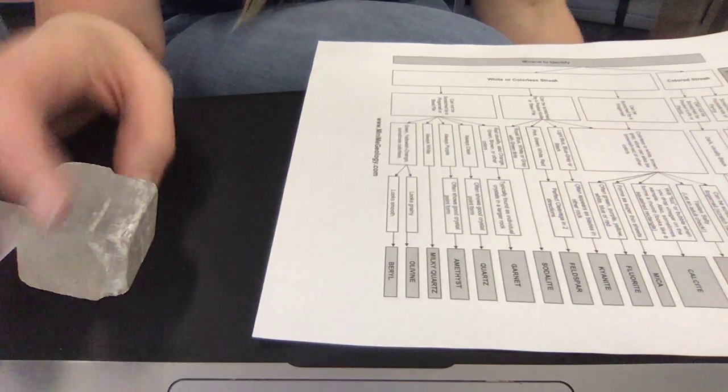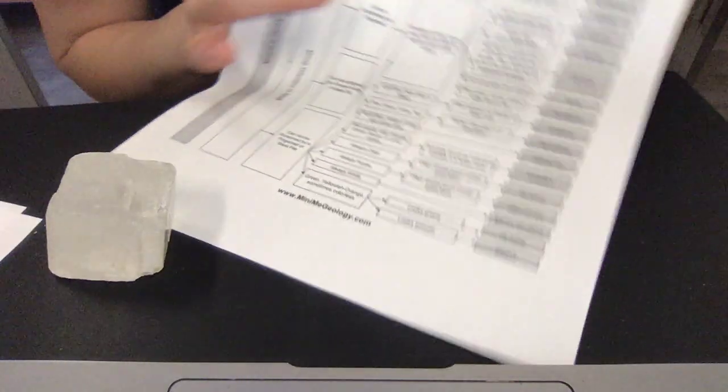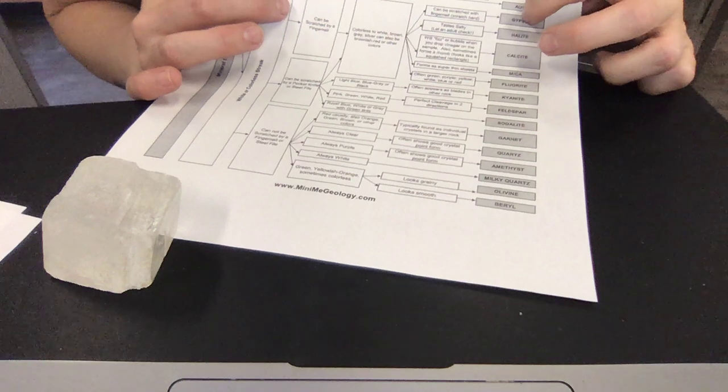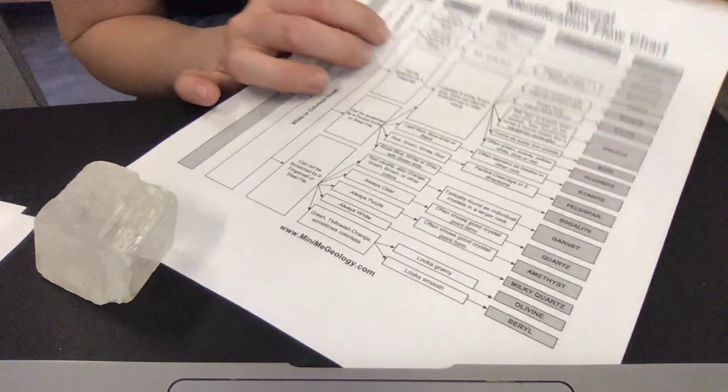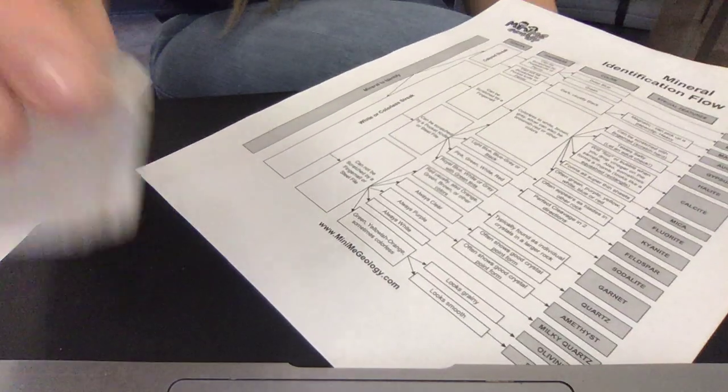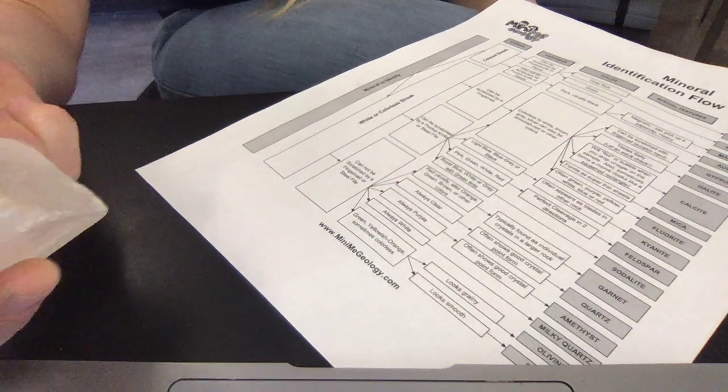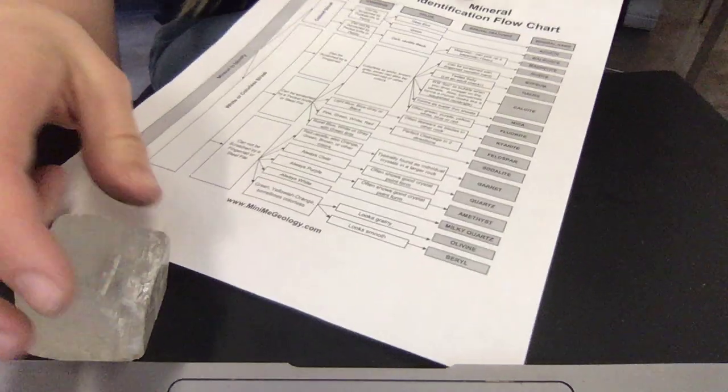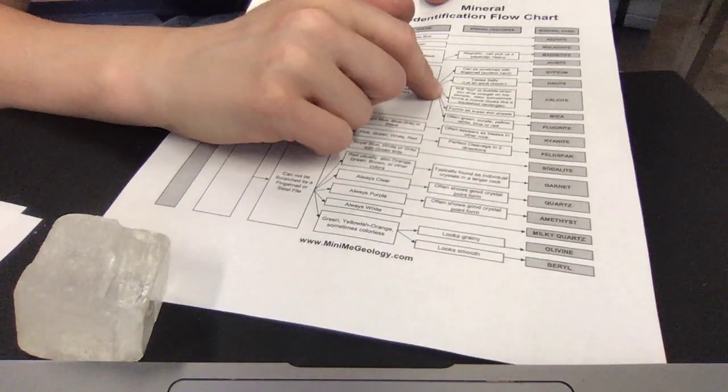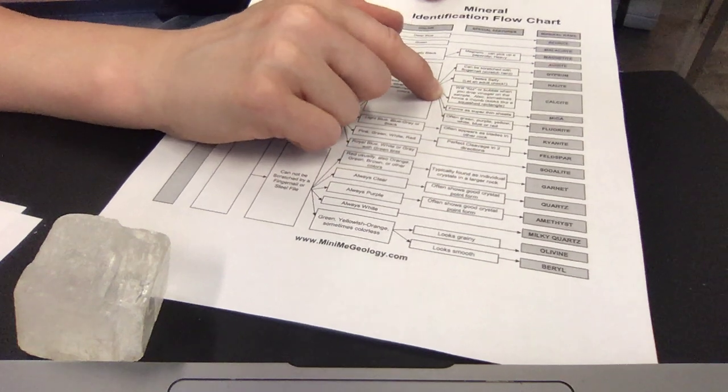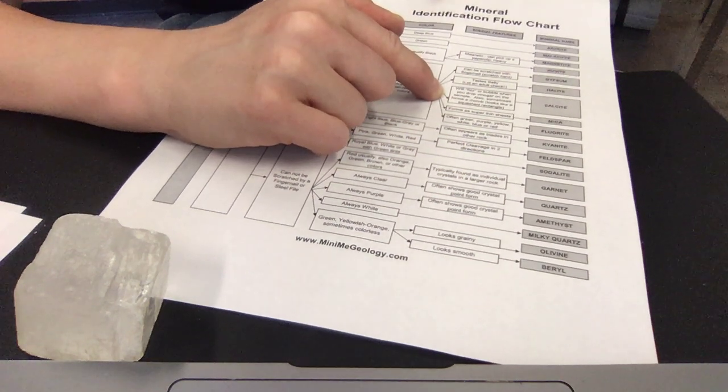So we know it can be scratched by a fingernail. It says taste salty. Let an adult check. Maybe just don't lick rocks. But yeah, this one I know will not taste salty because this one is not salt. So I'm not going to bother licking it. Now we have this other special feature, special characteristic, saying it'll fizz when you drop acid on it.